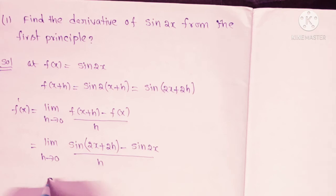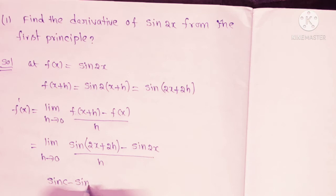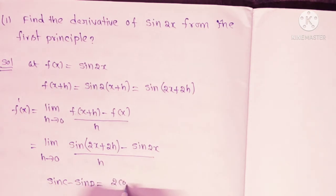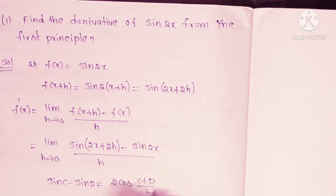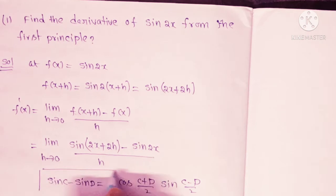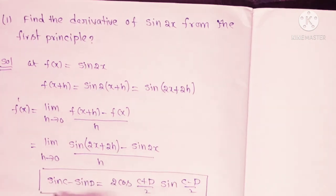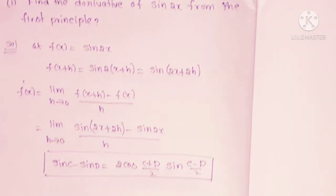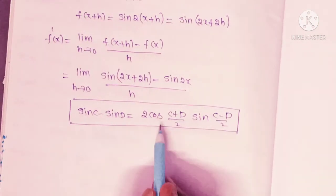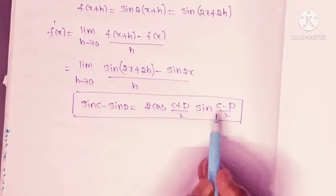The numerator value is of the form sin C minus sin D. The formula is: sin C minus sin D equals 2 cos((C plus D) by 2) into sin((C minus D) by 2).